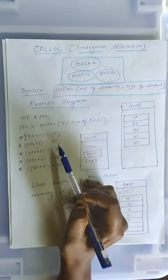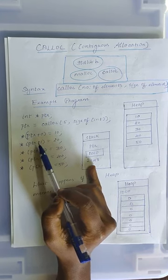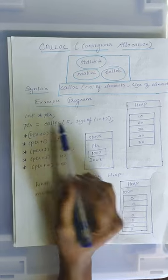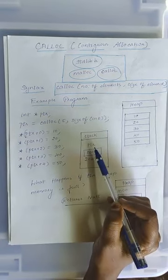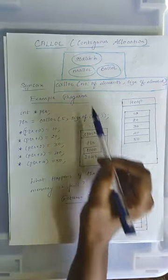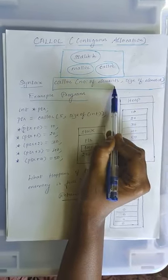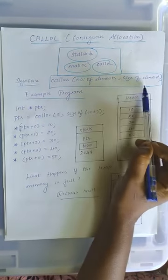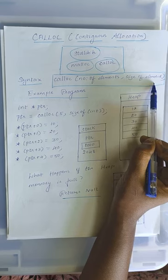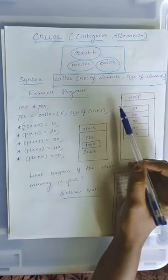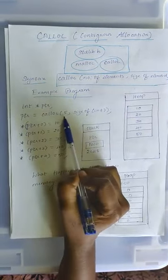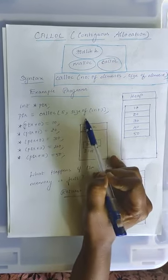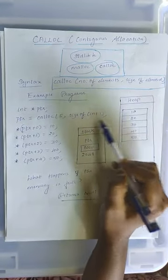The first statement is the declaration of integer pointer. In stack memory, 4 bytes is allocated for integer pointer. CALLOC takes two arguments. First argument is the number of elements and the second argument is the size of each element. In heap memory, 5 blocks of memory is allocated and each block is made of 4 bytes which is the size of integers.